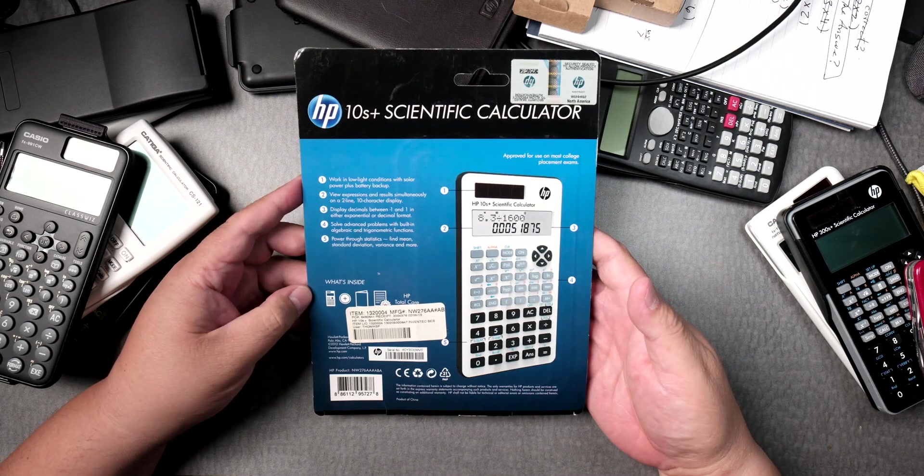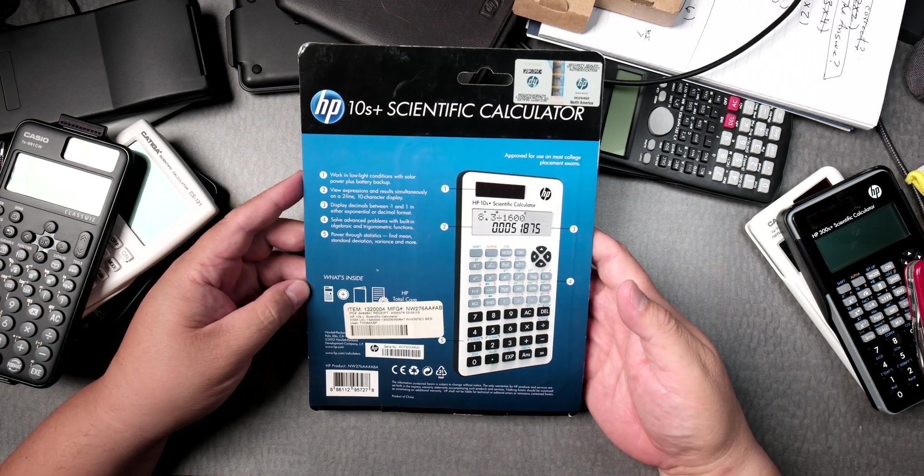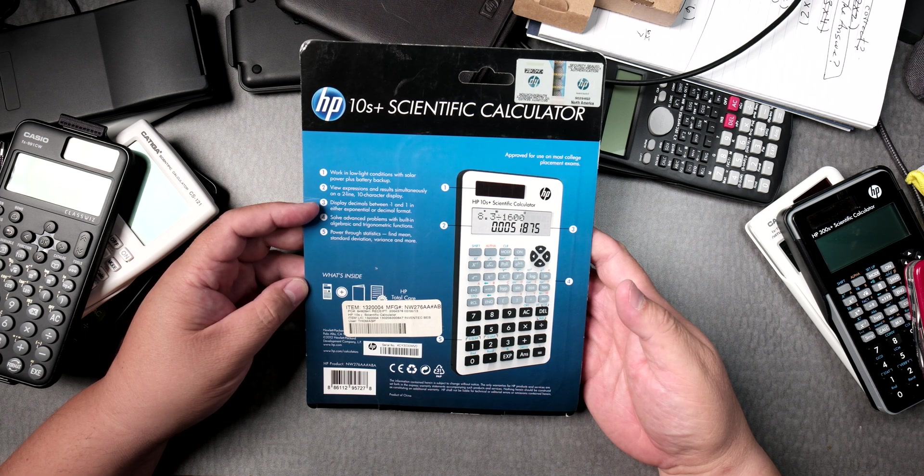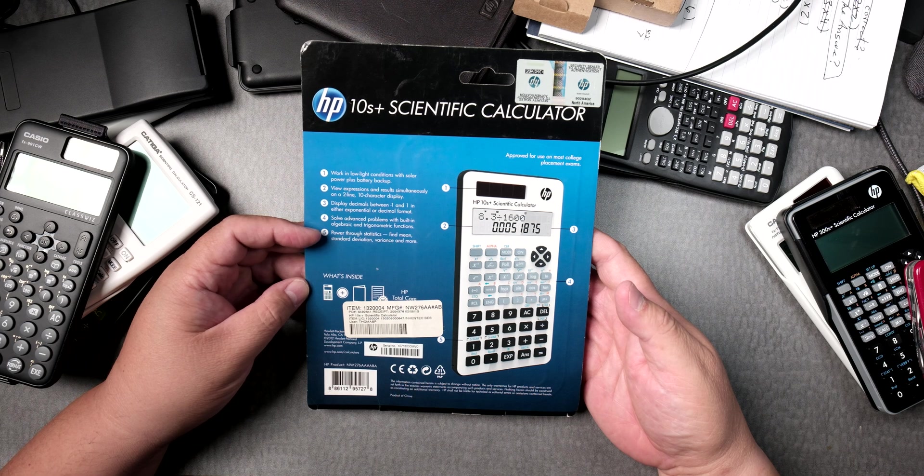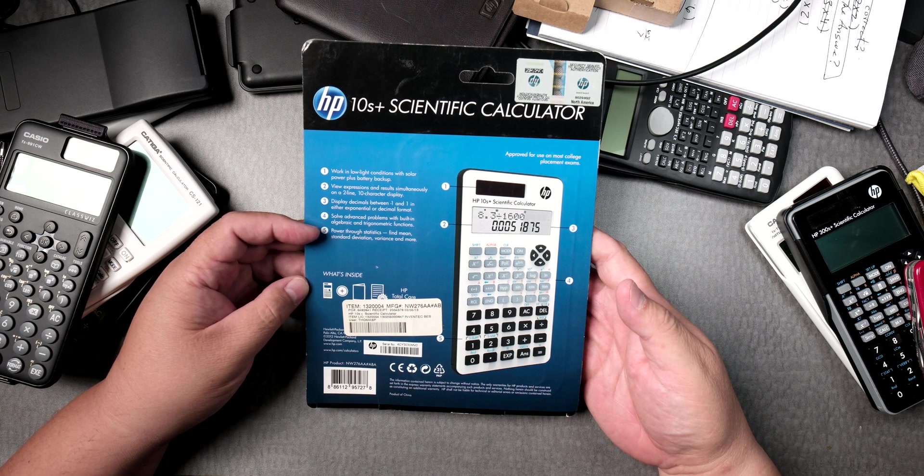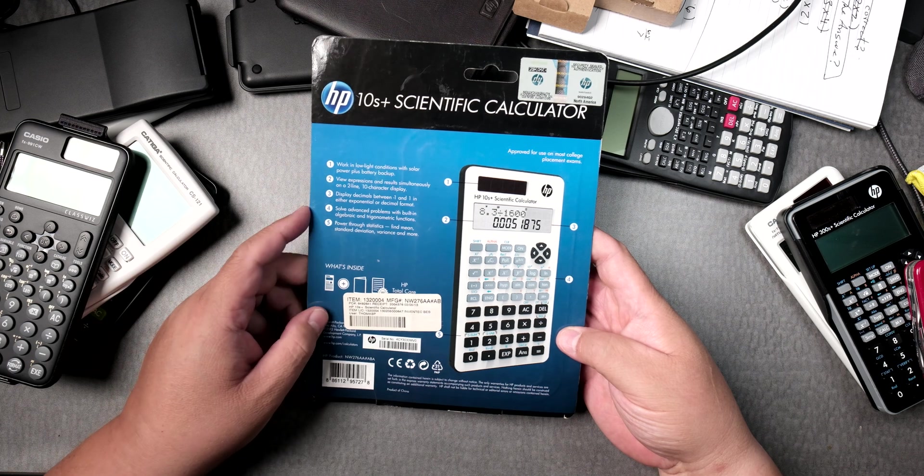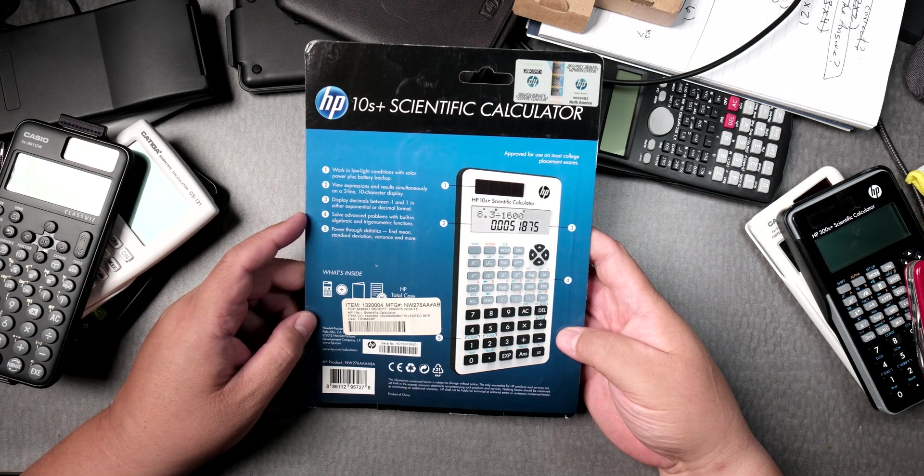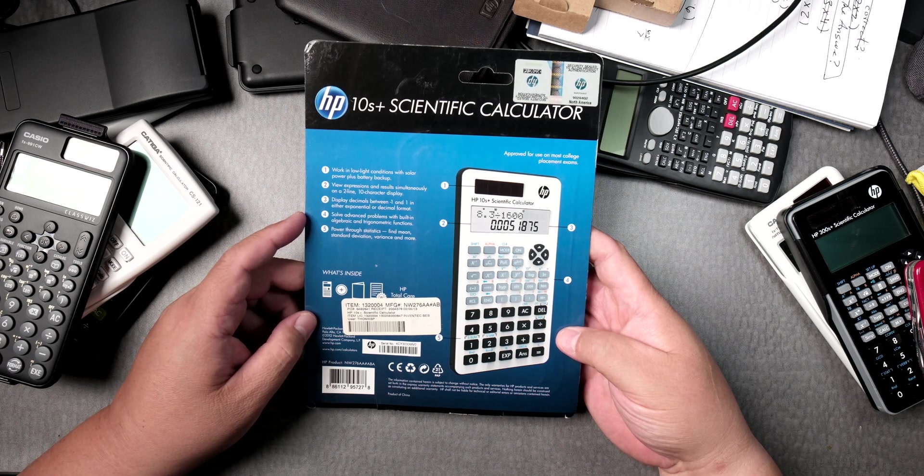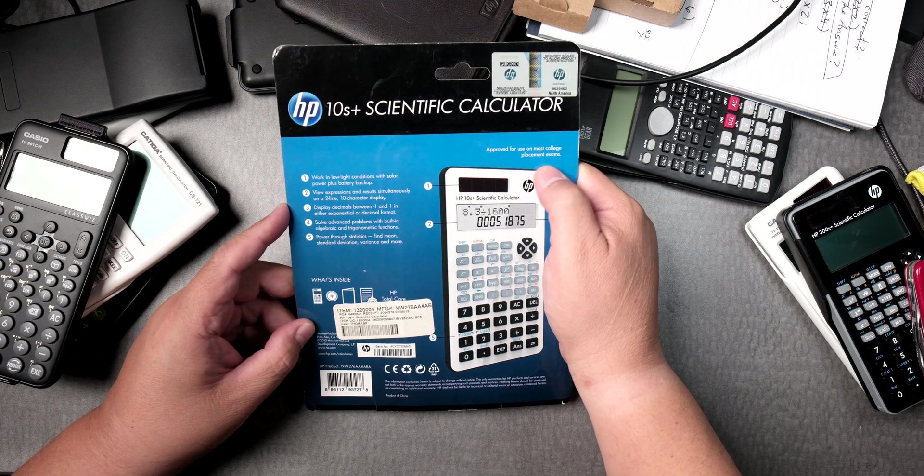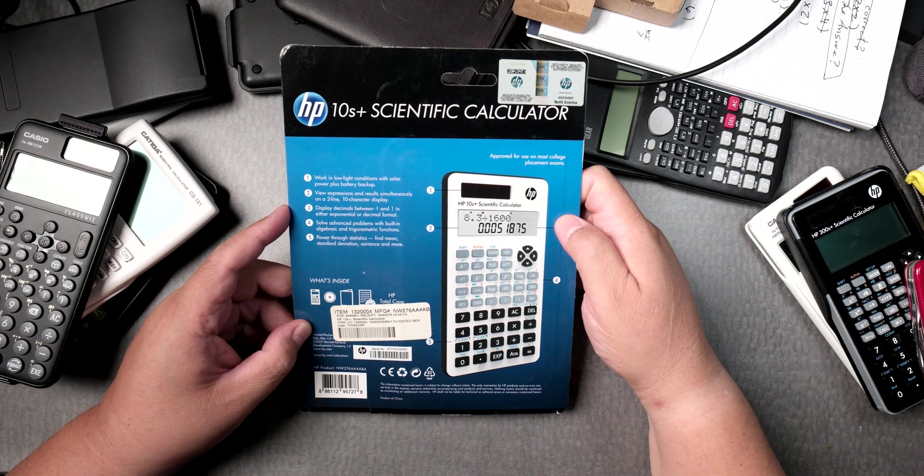It says that it works in low light, view expressions, display in decimals, tune lines, solve advanced problems, power through statistics. And it looks like it might have some type of small little guide approved for use on most college placement exams, but it doesn't tell you which ones.